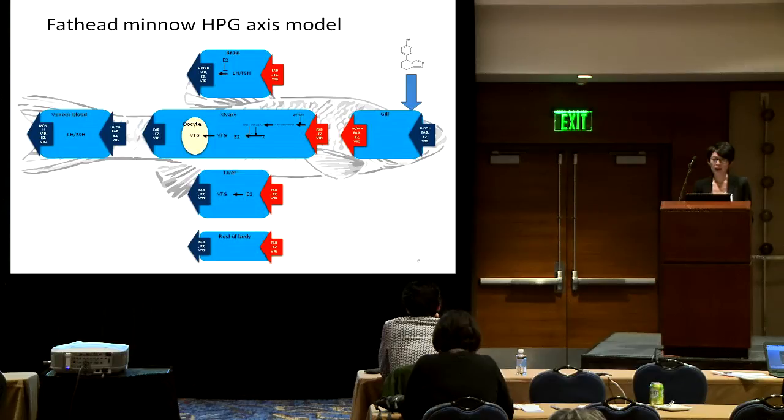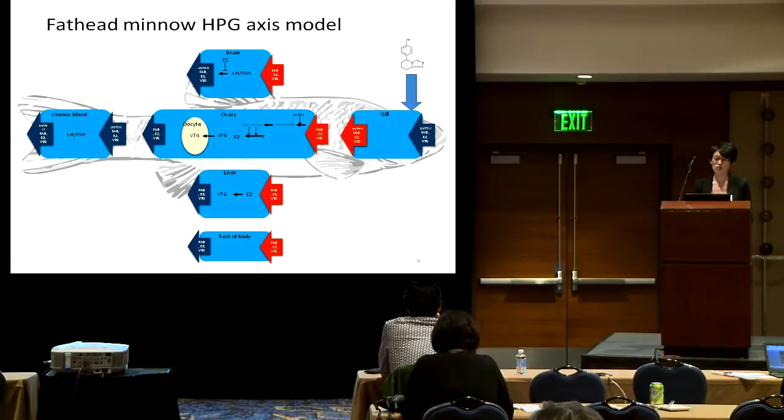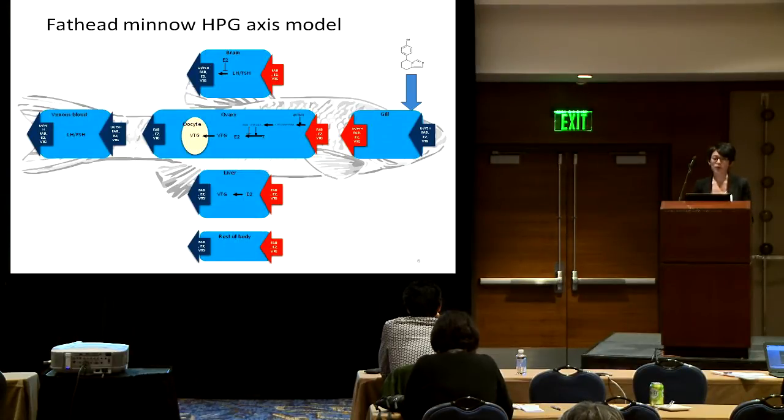The fish body then senses a reduced concentration of estradiol, and the model describes that regulatory hormones LH and FSH are released from the brain, where LH and FSH can stimulate the synthesis of aromatase messenger RNA. This is the regulatory loop described in the computational model. Also, estradiol circulates in the bloodstream and reaches the liver, where estradiol binds to estrogen receptor to drive the production of vitellogenin. Vitellogenin is an important egg yolk precursor to support egg development.